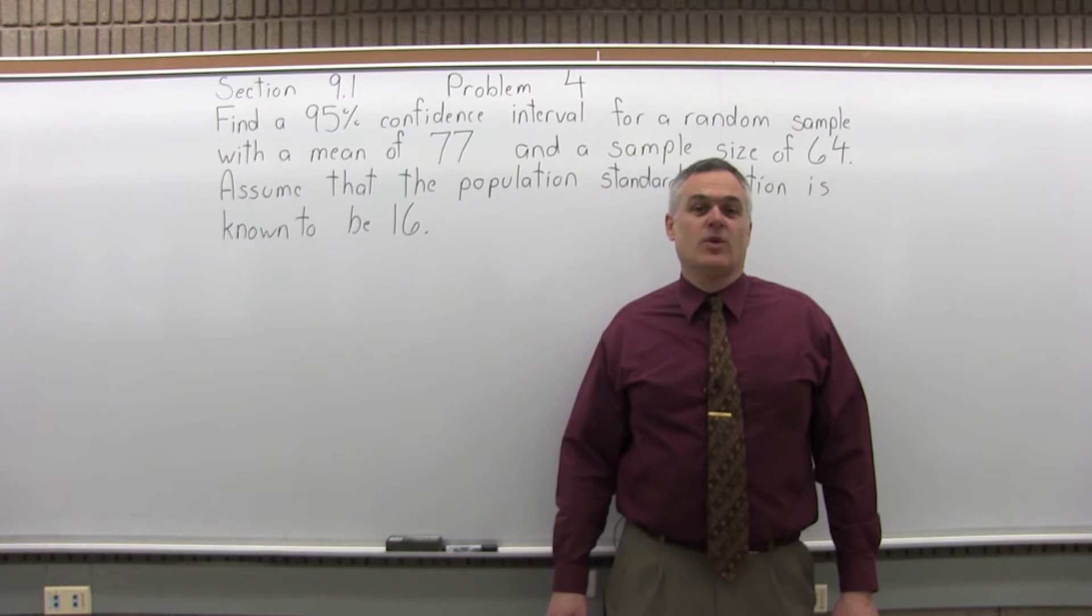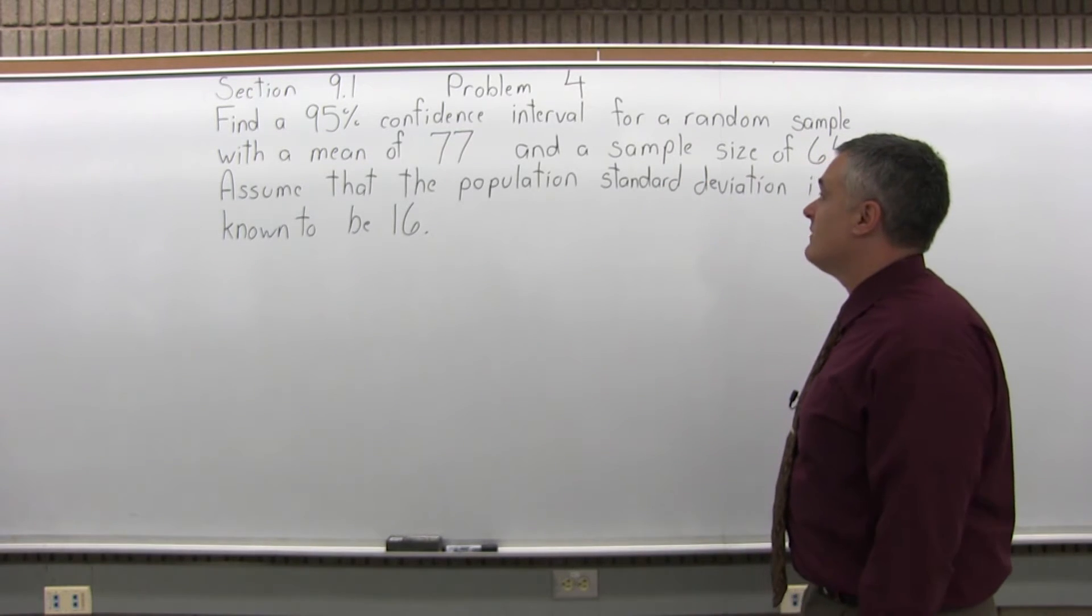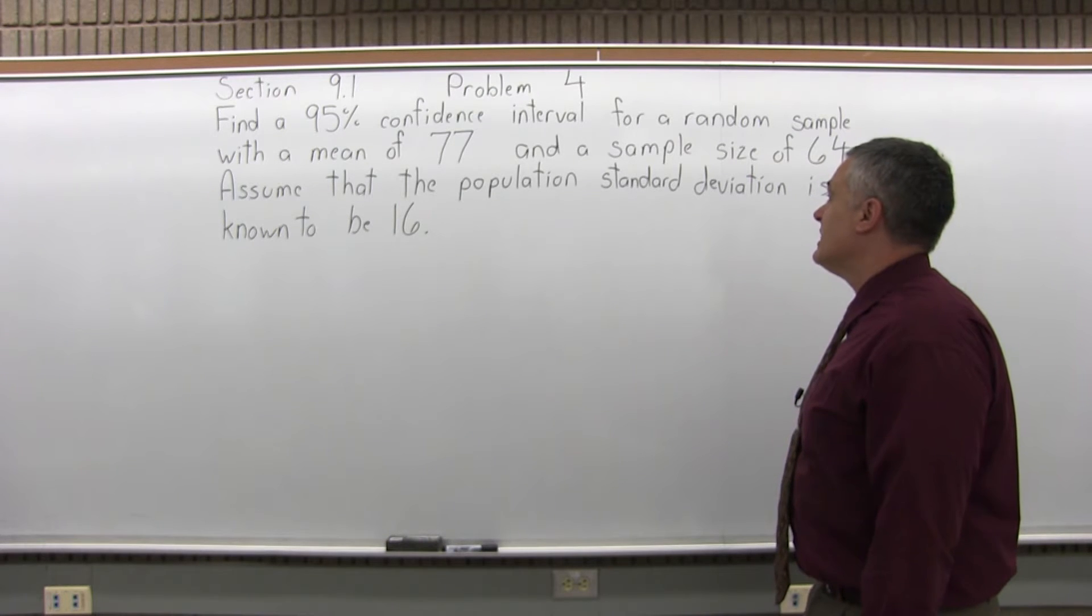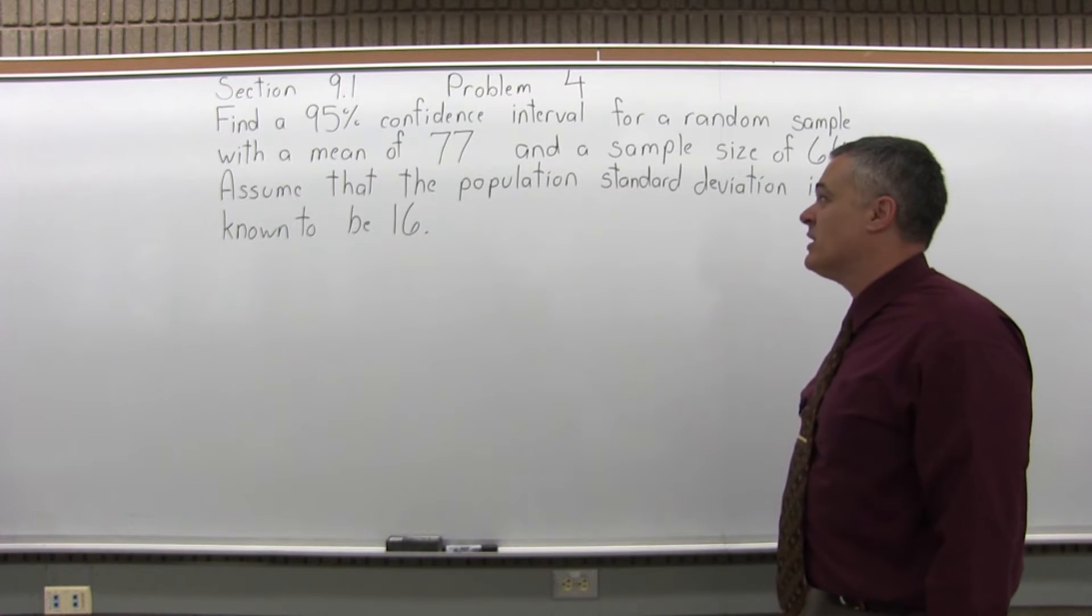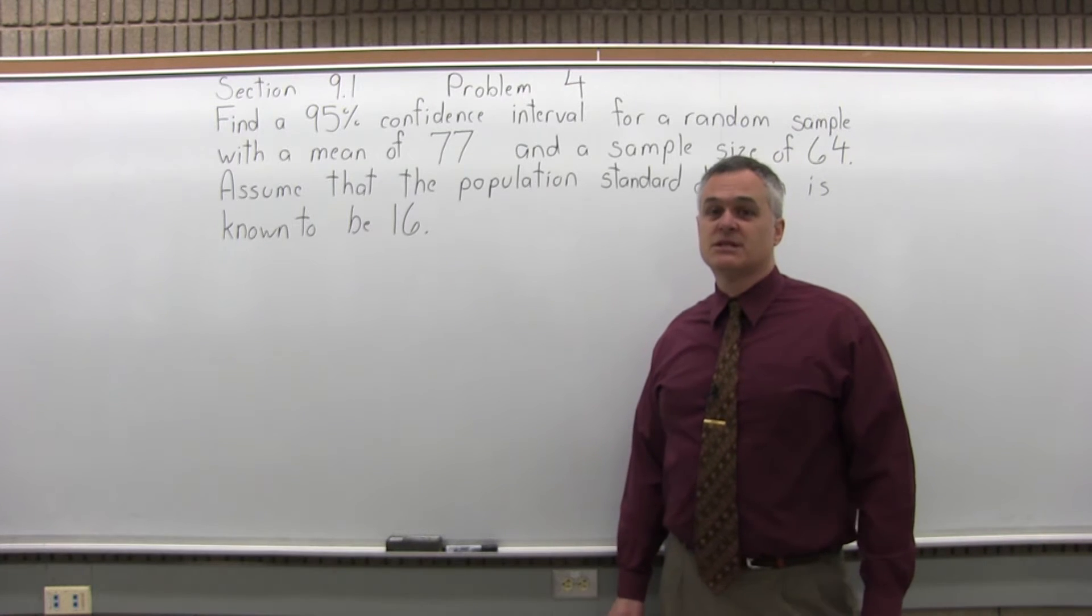This is Section 9.1, Problem 4. It says find a 95% confidence interval for a random sample with a mean of 77 and a sample size of 64. Assume that the population standard deviation is known to be 16.